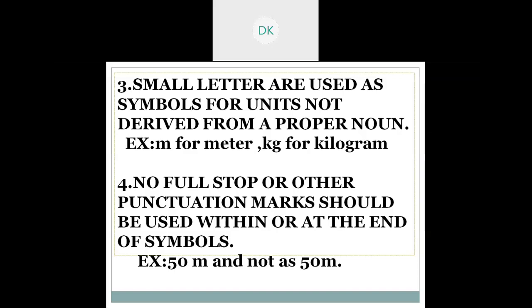Fourth one: no full stop or other punctuation marks should be used within or at the end of symbols. You know in English you used to follow punctuation marks. After finishing one sentence or any paragraph, you used to keep full stop. But in the case of SI system for the units, when you are going to use a unit, you should not keep full stop like this. See here, 50 m is correct. You should not write it as 50 m dot.